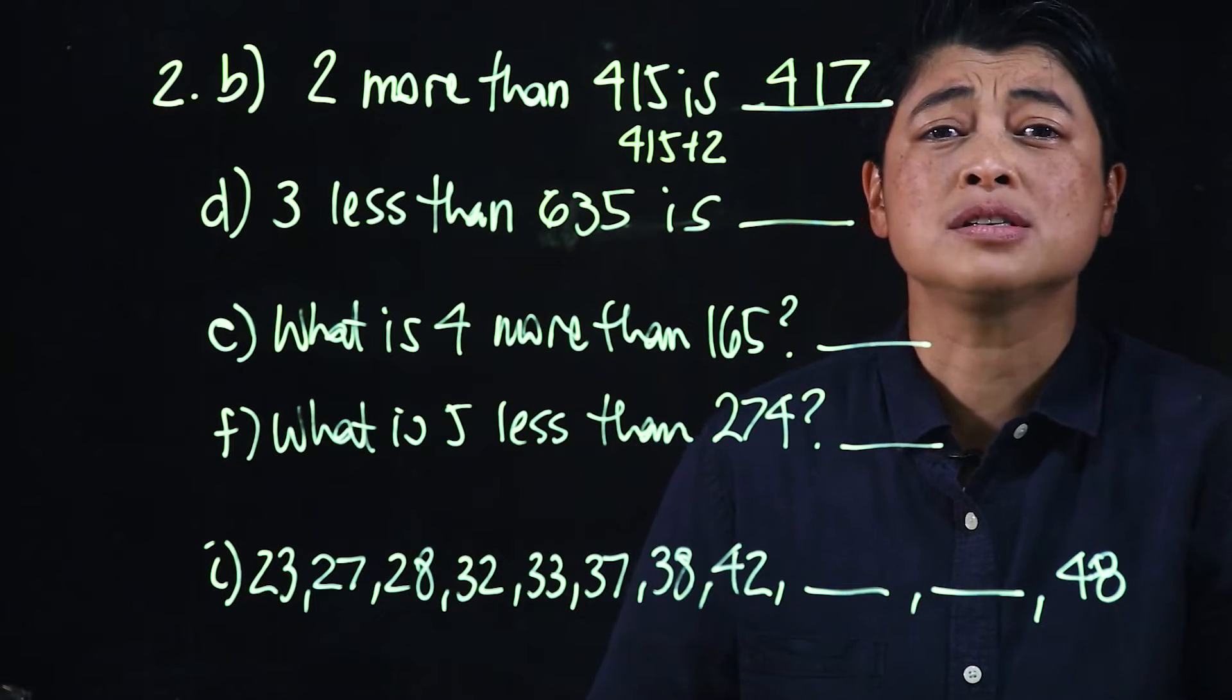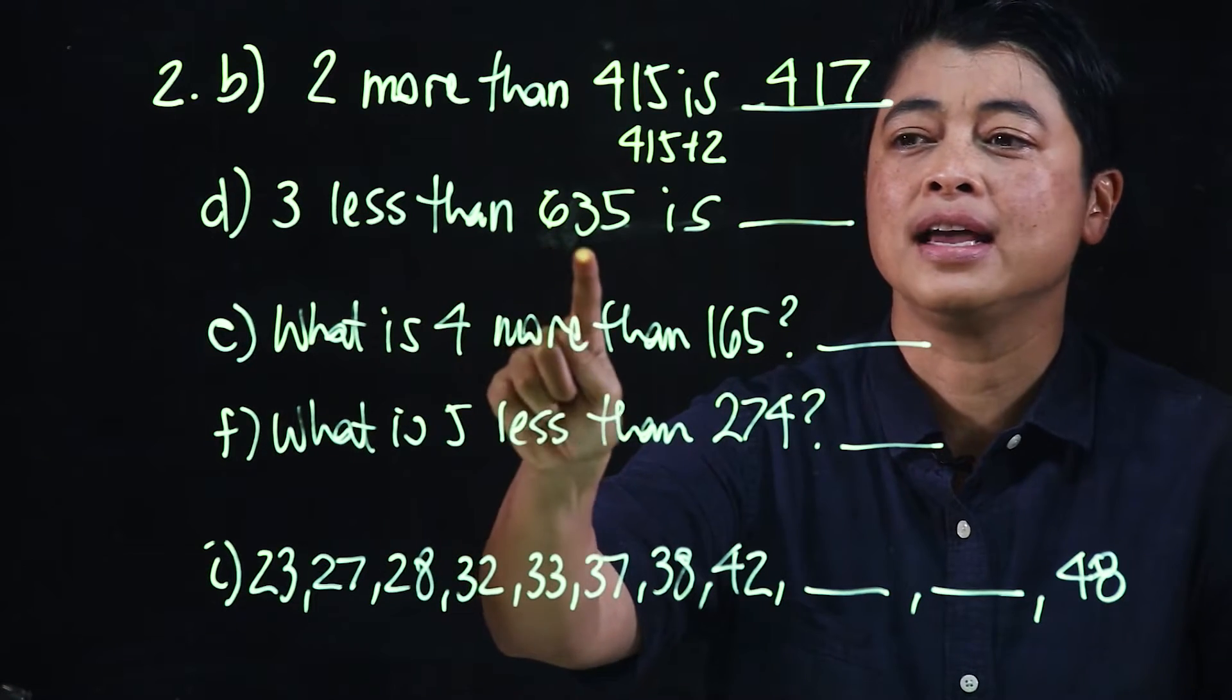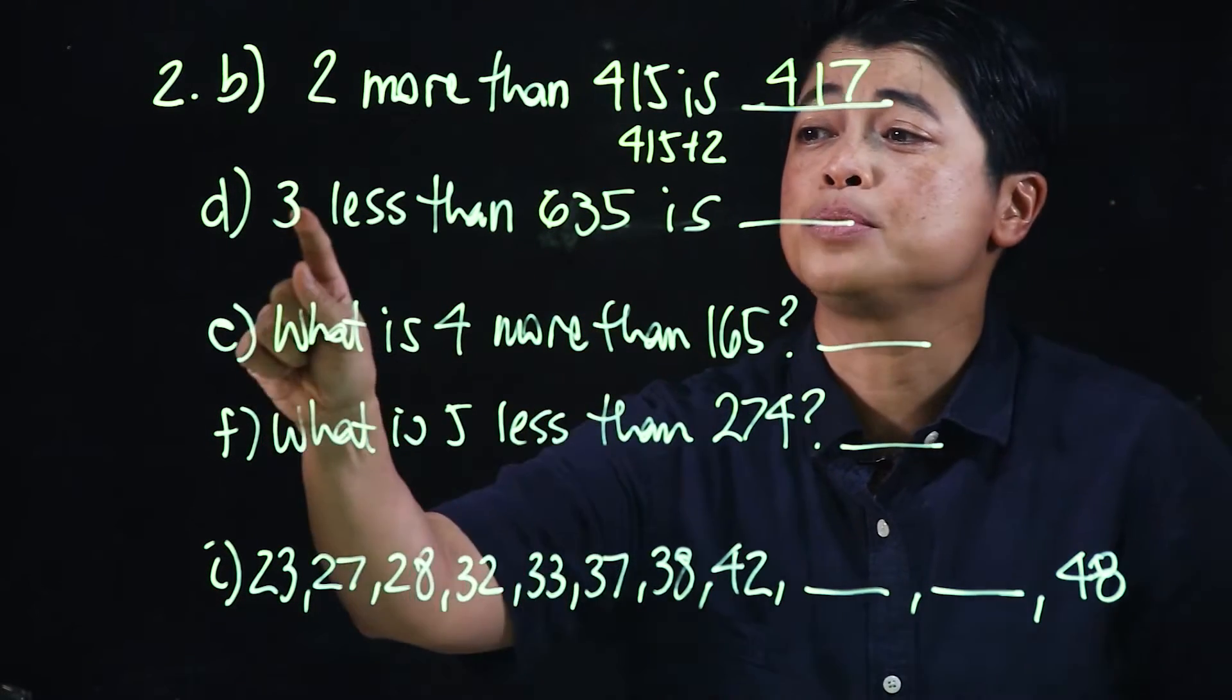3 less than 635. So we're subtracting 3 from 635, which means that would be 632.